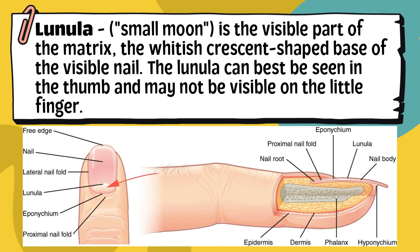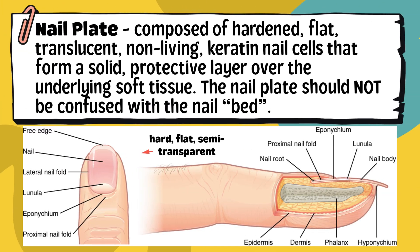Seventh, the lunula — meaning 'small moon' — is the visible part of the matrix, the whitish crescent-shaped base of the visible nail. It can best be seen in the thumb and may not be visible on the little finger. Eighth, the nail plate is composed of hardened, flat, translucent, non-living keratin nail cells that form a solid protective layer over the underlying soft tissue. The nail plate rests on the nail bed up to the free edge and its main job is to protect the soft tissue underneath.